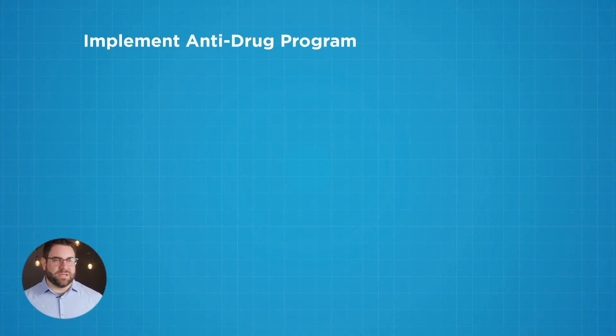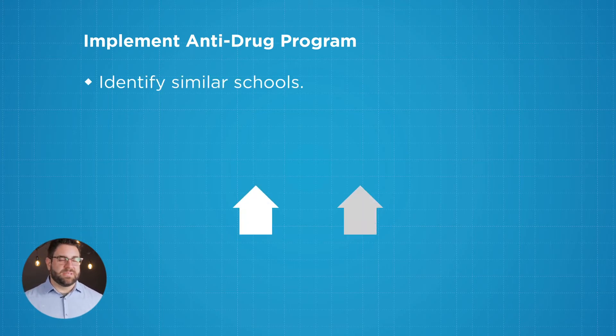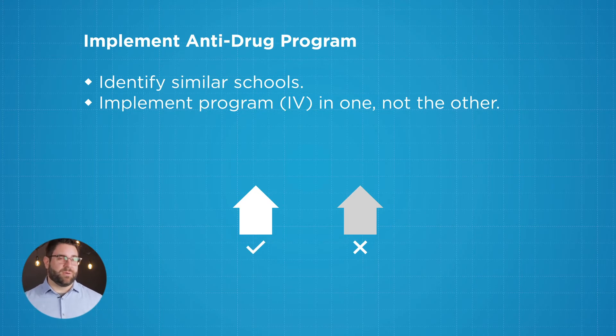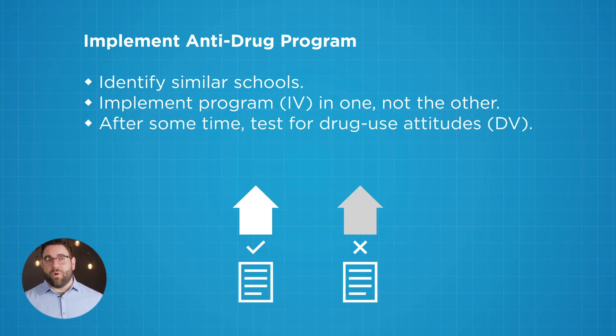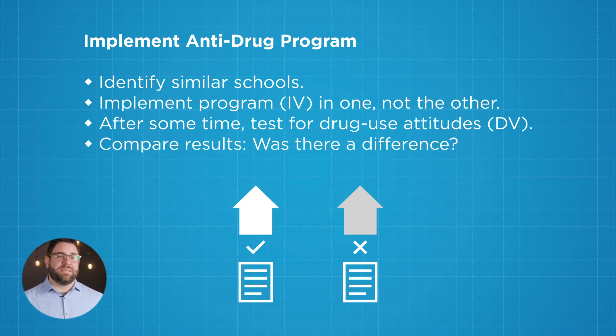So when should you use quasi-experimental research designs? There are a lot of instances where this may be the appropriate design. For example, say you were a school district curious if you could implement a new anti-drug program for your students. You wouldn't just want to try this out without actually testing it, so you would find two similar schools. In one school you would implement the new anti-drug program, and in the other you wouldn't. At the end of the semester or the year, you could test the students and see what their attitudes toward drug use were. By doing that, we could compare whether this would be effective in a similar environment — we can see this relationship without having to implement something we don't fully understand. This is really nice because it's a natural setting and feels very realistic; we're seeing the program in the environment it will be used.